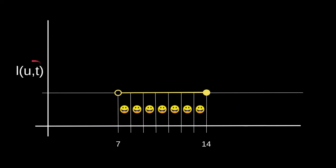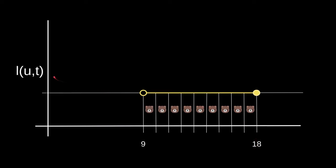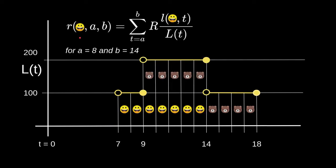When we graph LUT for Alice, the graph will look like this. Likewise for Bob, the amount of tokens staked by Bob for t greater than 9 and less than or equal to 18 is a constant. When we graph LUT for Bob, the graph will look like this.